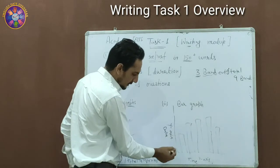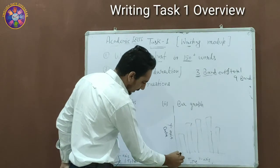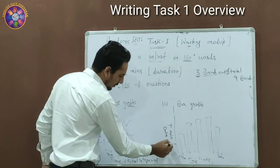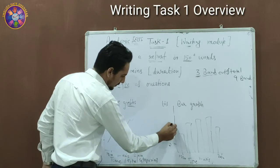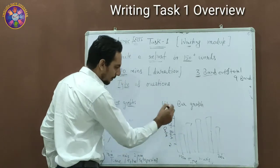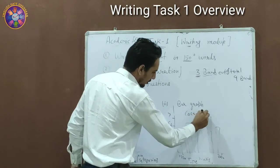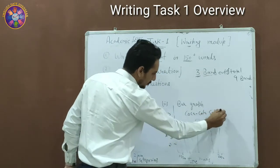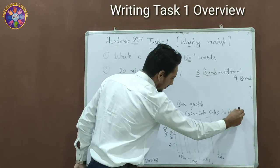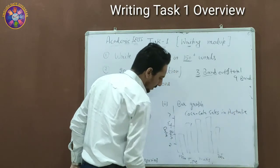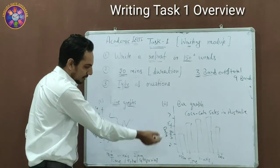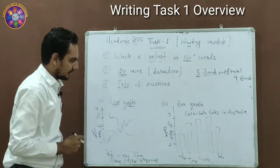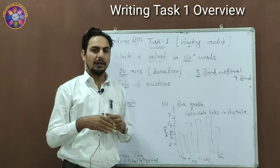The second type is a bar graph. Bar graphs are slightly different from line graphs but show similar information: time on the x-axis, for example from 1990 to 2010, and data on the y-axis such as 4 million, 6 million, 7 million. For example, it may be about Coca-Cola sales in Australia or India, showing the sale amount over time.